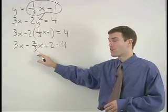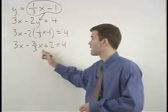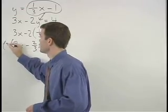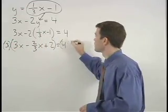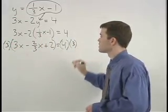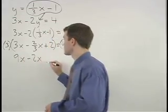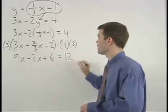And now we need to get rid of the fraction by multiplying both sides of the equation by 3 to get 9x minus 2x plus 6 equals 12.